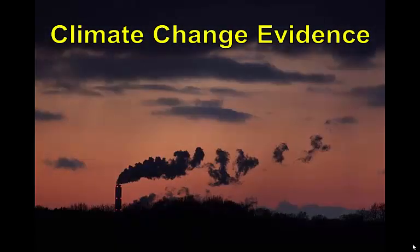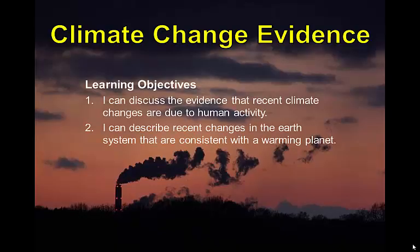In this lesson, we will examine some of the indicators that Earth is warming and the evidence that suggests that these changes are the result of human actions. We have two learning objectives. First, we will discuss why many people think that recent climate changes are due to human activity. And second, we'll review some natural indicators of a changing climate.